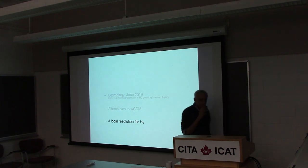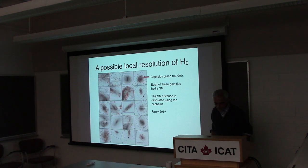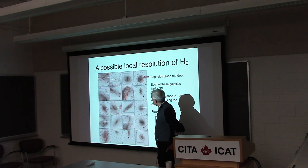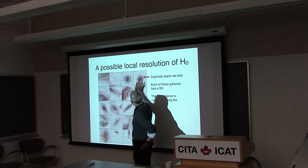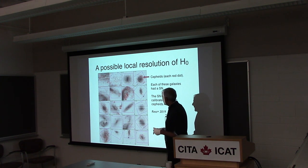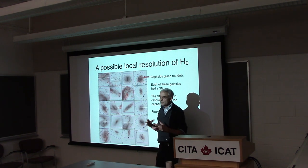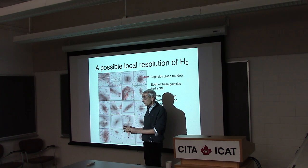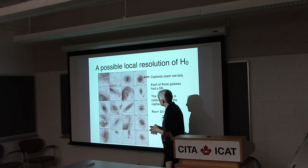I'm going to talk about a proposal we published this summer for a local resolution of H0. These are the 20 galaxies that Riess et al. used to measure the local H0. Each has had a supernova go off, and the red dots show the Cepheid variables — pulsating stars measured carefully in all these galaxies. They measure the period-luminosity relation of each star, get the luminosity from that relation, compare it to the measured flux to get a distance, and distance gives H0.